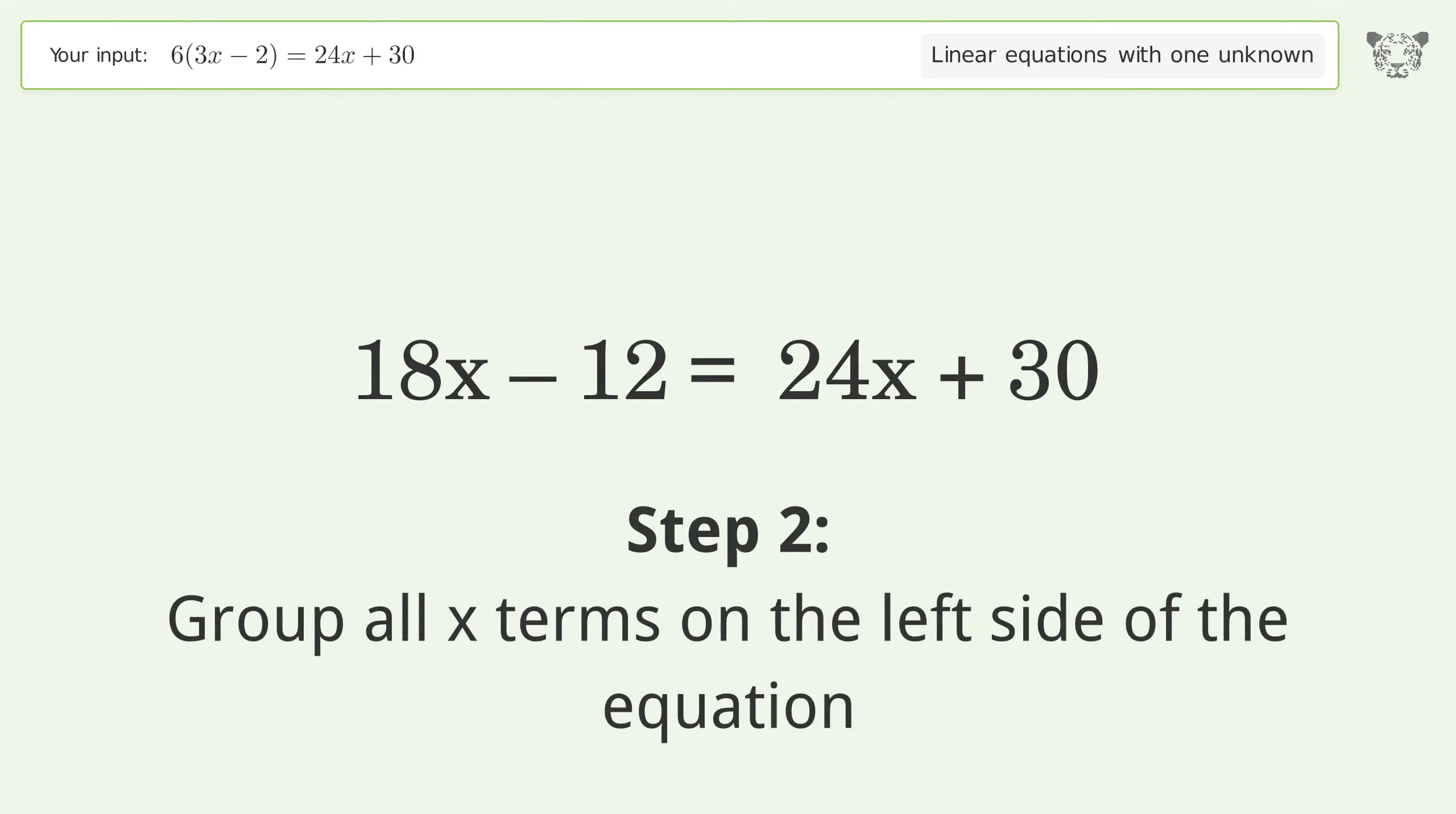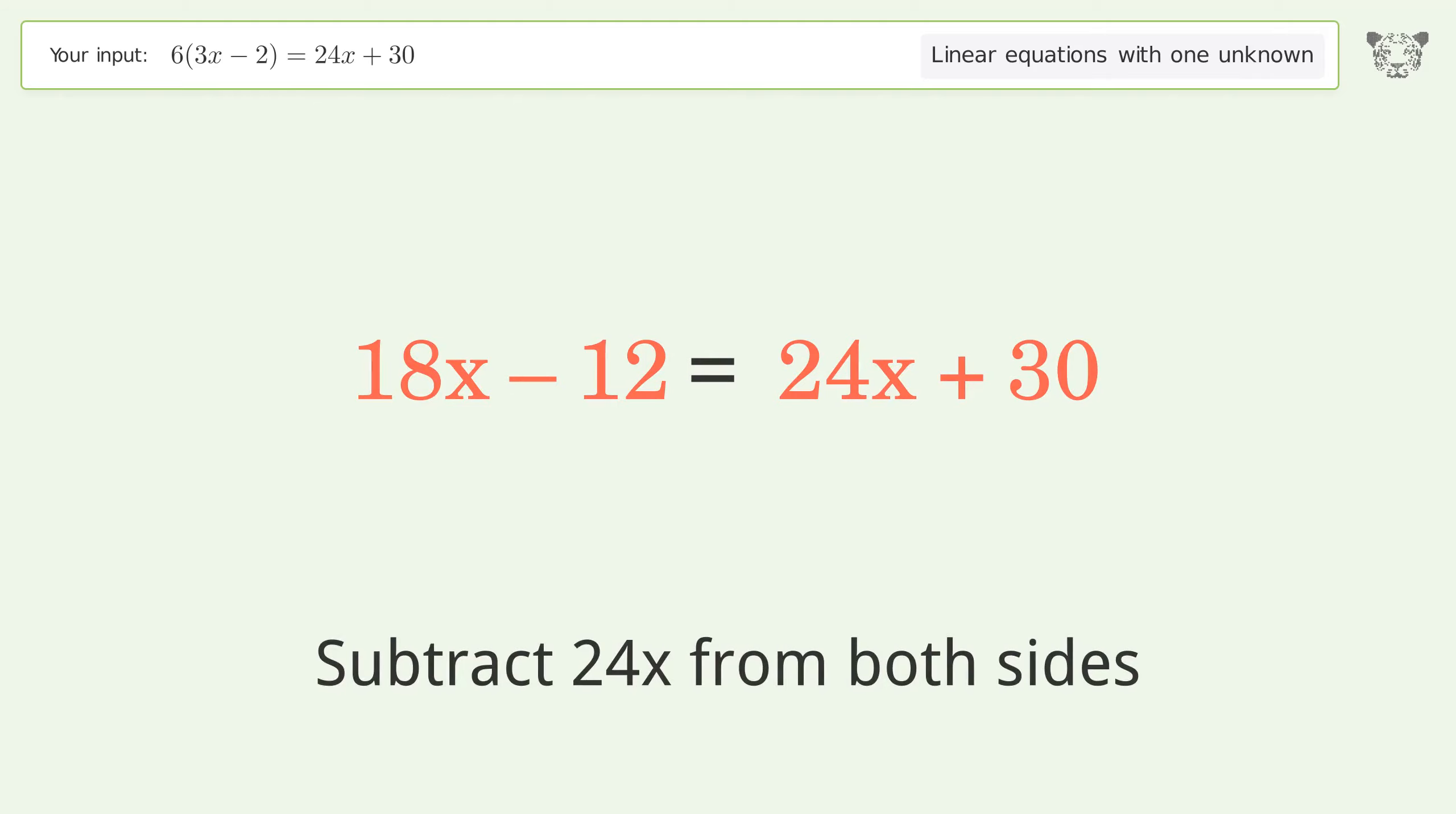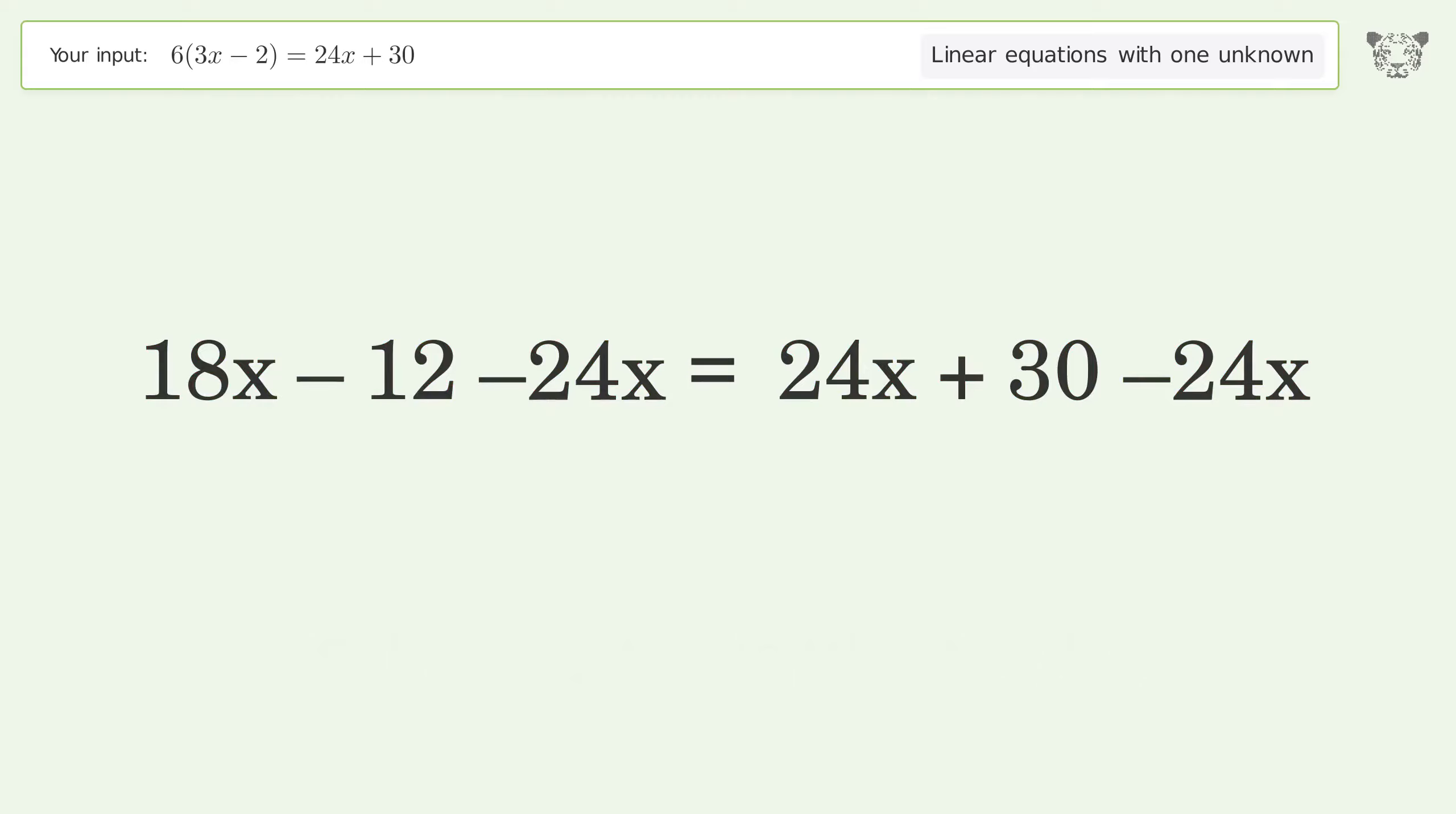Group all x terms on the left side of the equation. Subtract 24x from both sides and group like terms.